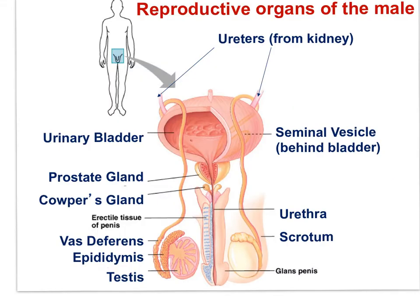The male and female reproductive systems are paired systems — there are two testes as there are two ovaries. We can see the two testes, as well as the circuitous route taken by the sperm through the epididymis, along the vas deferens, past the seminal vesicles, into the prostate to reach the urethra. This image also nicely shows the ureters that run from the kidneys to the bladder.